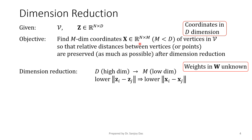We have d dimensions in the original data and then we reduce it to m dimensions, which is low compared to d, in such a manner that when the distance between vertices i and j are low in high dimensions, then they are also low in low dimensions.